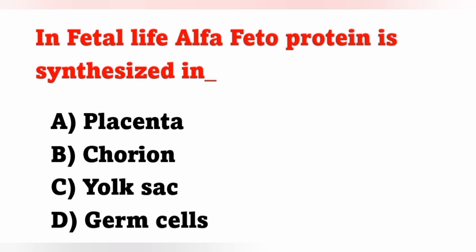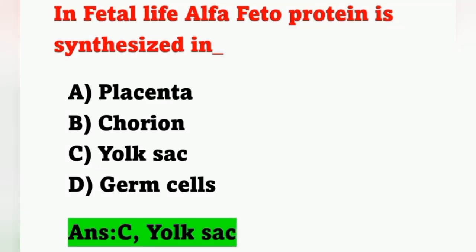The next question: in fetal life, alpha-fetoprotein is synthesized in — options: A: placenta, B: chorion, C: yolk sac, D: germ cells. Alpha-fetoprotein is synthesized in the yolk sac — option C is the correct answer.